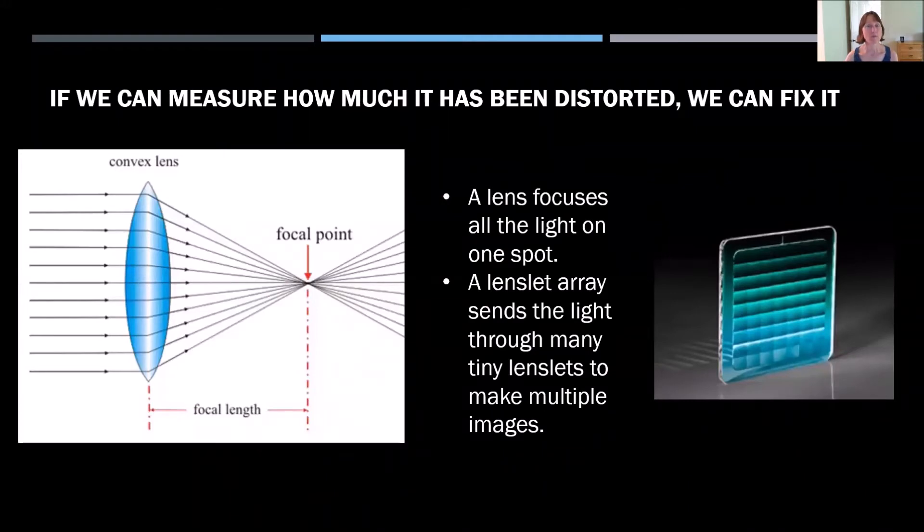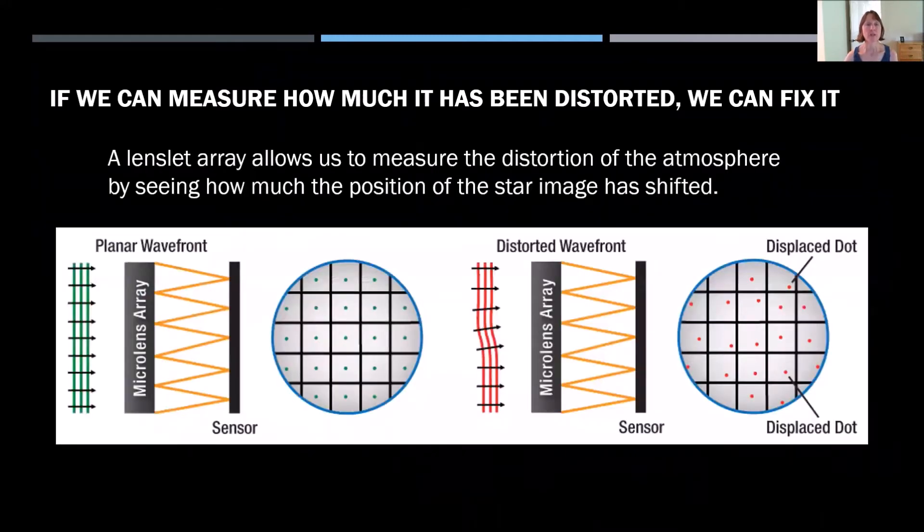So if we can measure how much they've been distorted, we can try to fix it. So how do we measure it? Well, when light rays are parallel, they all come to a focus through a lens at a single point. So what we do is we create a matrix of little tiny lenslets that make a bunch of multiple images of the same star. Now, if we have a perfect planar wavefront, as it goes through these lenslets, the stars make images in the center of each one of these squares. But after they've been distorted by our atmosphere, the circles, the dots are no longer centered in the squares. And we can measure how much they've been displaced, and that tells us how much distortion that part of the light wave went through.